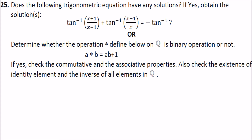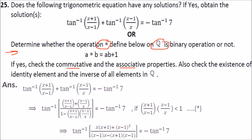The next question has two options again. The first asks whether the trigonometric equation tan inverse(x+1 by x−1) plus tan inverse(x−1 by x) equals tan inverse(−7) has any solution. The second option asks whether the star operation defined on Q is a binary operation, checking commutative and associative properties, identity element, and inverse.